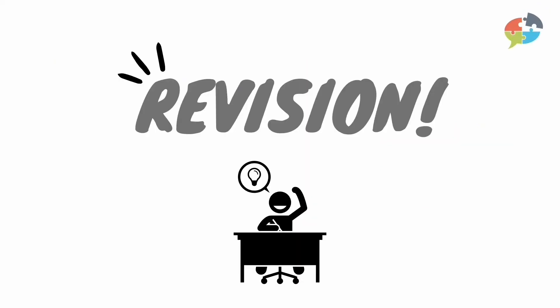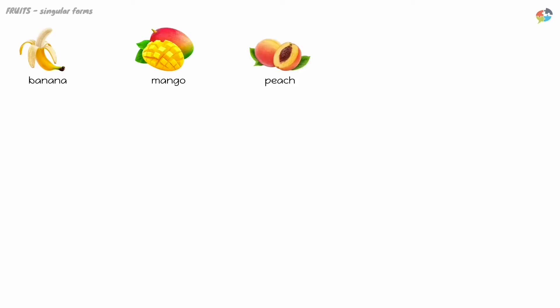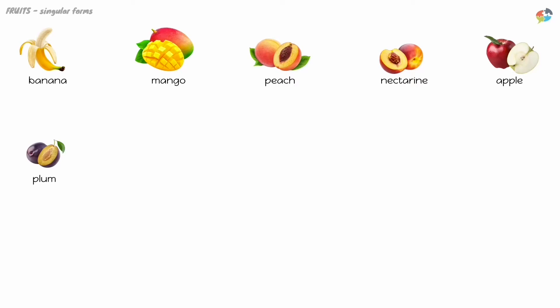Let's revise the learned vocabulary so far. Banana, mango, peach, nectarine, apple, plum, pear.